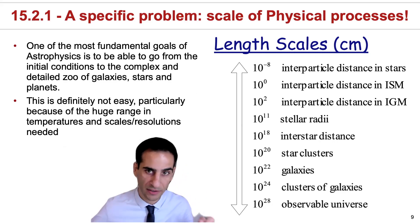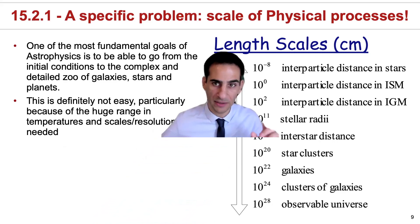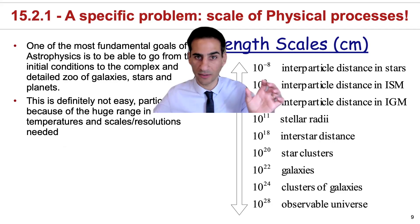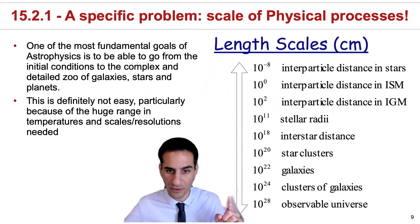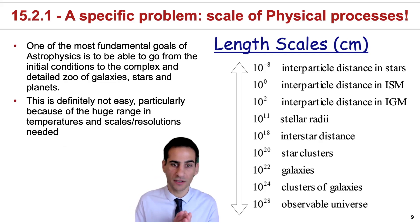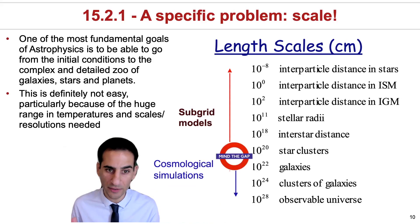That are happening in terms of the interparticle distance in stars, so that you can actually model the quantum effects leading to fusion, all the way down to the full observable universe, which is something like 10 to the 28 centimeters. And this is just not possible at all.